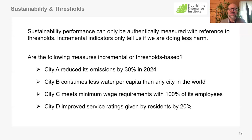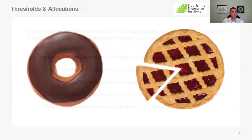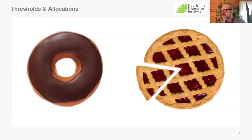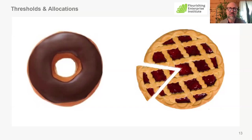The next slide gives a whimsical sense of thresholds and allocations. Most of you are familiar with the donut, which is a sense of a threshold. The other image is allocation — or a fair slice of the pie. We're going to give some quick background on these concepts before we go into some specific examples.